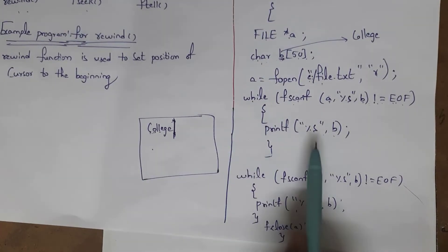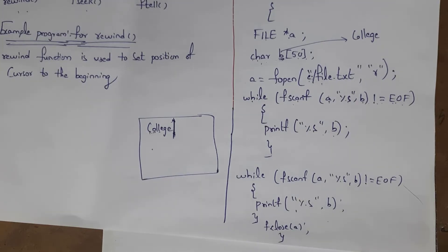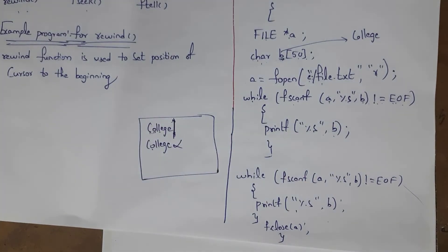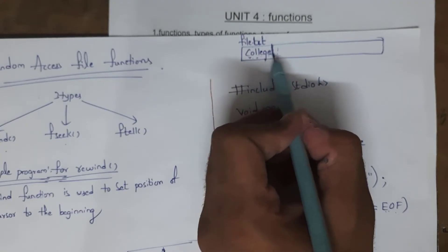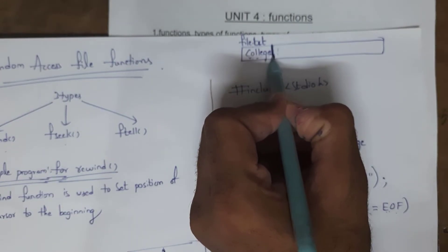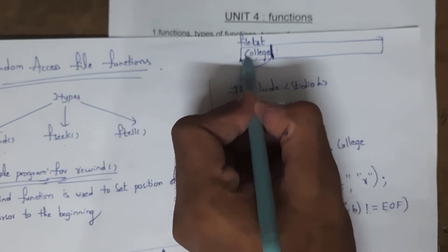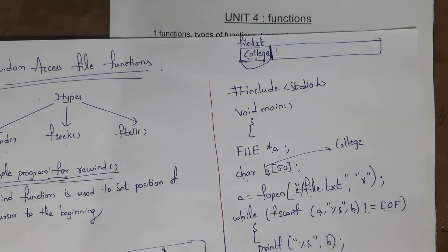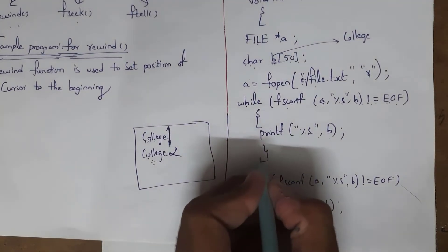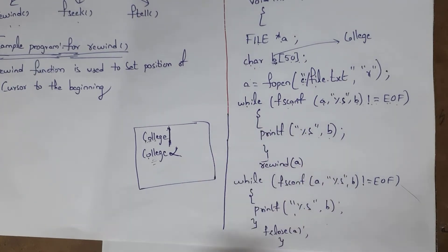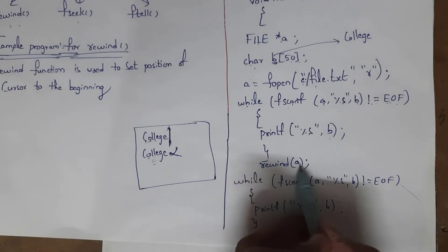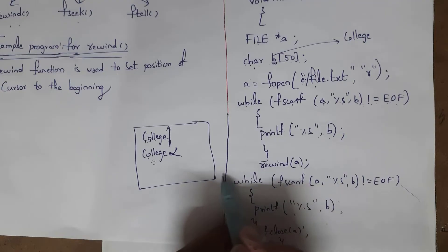Now I want to print 'college' again, so I written the same two lines of code — a while loop and printf. But I do not get 'college' again because when I printed the file information the first time, the cursor was placed at the last position. In order to print the same information again, I need to bring the cursor back to the first position. For that purpose we use the rewind function.